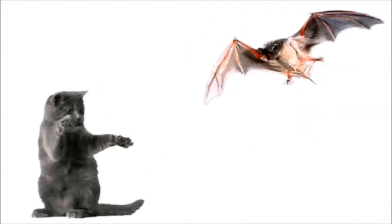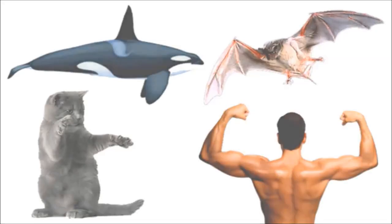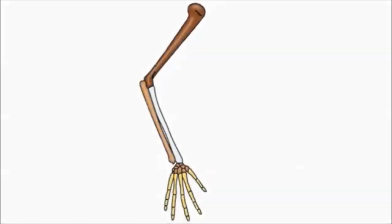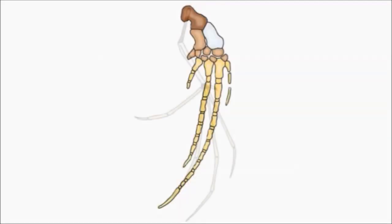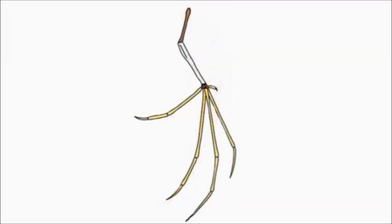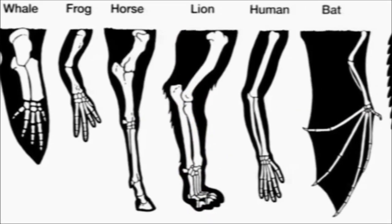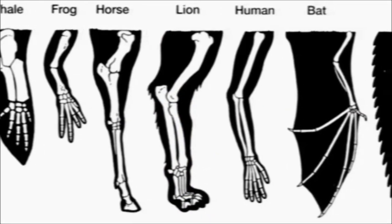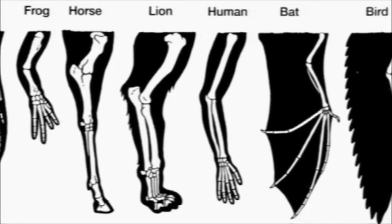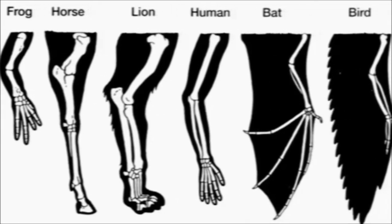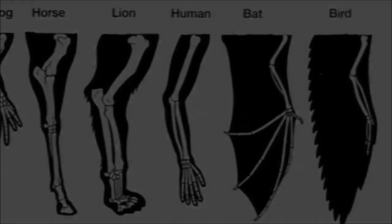The forelimbs, wings, flippers, and arms of different mammals are variations on a common structural theme. Similarity in characteristics resulting from common ancestry is known as homology, and such anatomical signs of evolution are called homologous structures. Comparative anatomy is consistent with all other evidence in testifying evolution is a remodeling process, in which ancestral structures that function in one capacity become modified as they take on new functions.